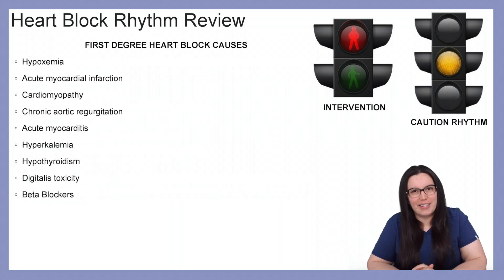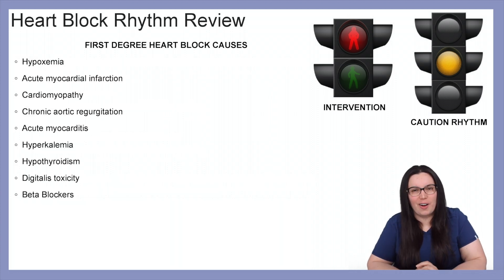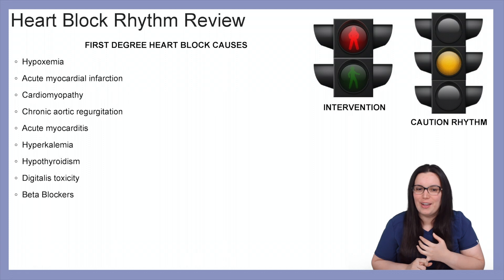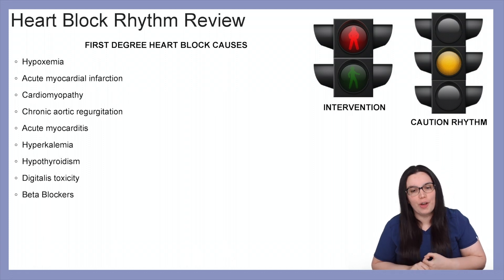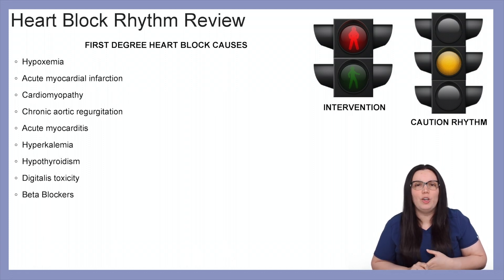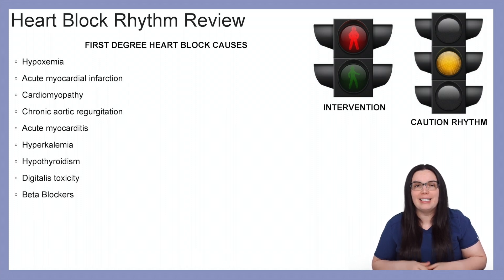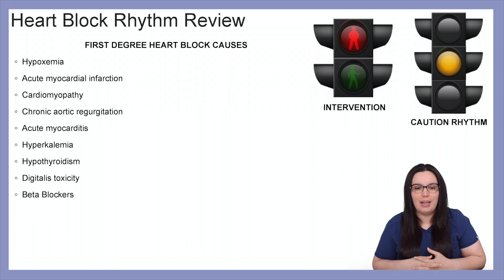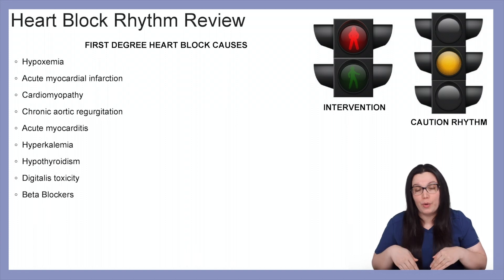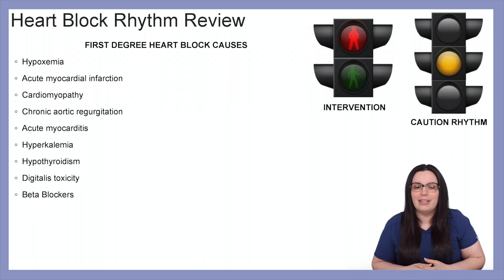Common causes for first degree heart block include hypoxemia, acute myocardial infarction, cardiomyopathy, chronic aortic regurgitation is a big one, acute myocarditis, hyperkalemia, hypothyroidism, digitalis toxicity, as well as beta blockers.